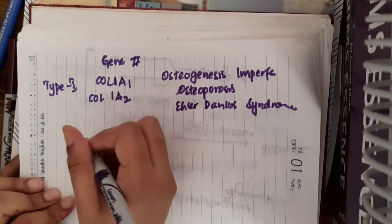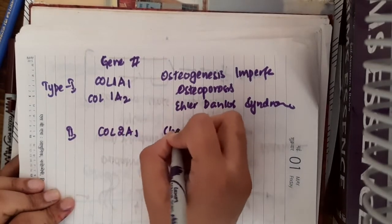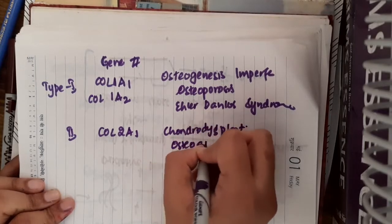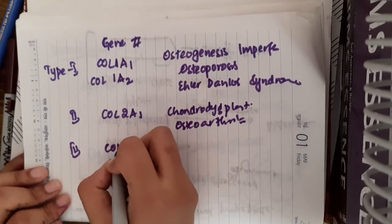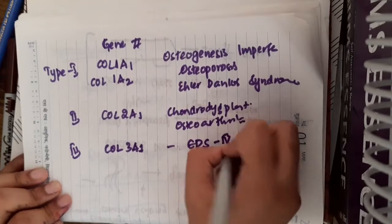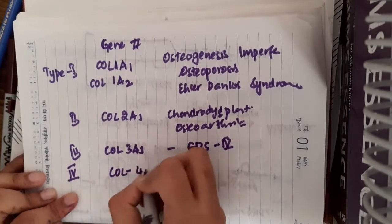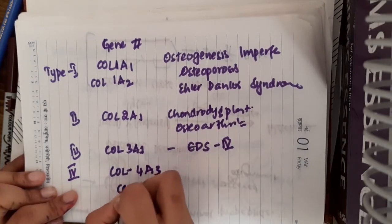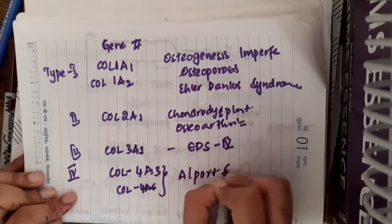Defect in type 2 collagen forming gene, that is COL2A1, results in chondrodysplasia or osteoarthritis. Then, defect in type 3 collagen which is due to the gene COL3A1 causes Ehler-Danlos syndrome type 4. Whereas, defect in type 4 collagen chain formation due to defect in COL4A3 and COL4A6 genes results in Alport syndrome.